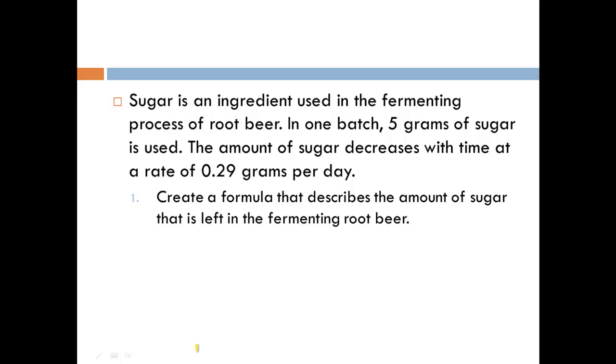So let's look at the information that we're given. First we're told that we start with 5 grams of sugar, and this represents an initial amount. Second, we're told how the amount of sugar changes. It is decreasing at a rate of 0.29 grams per day. This represents an average rate of change.